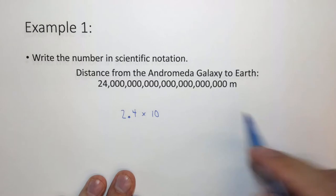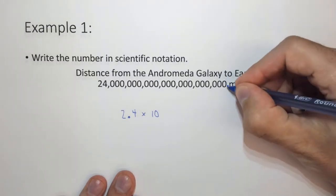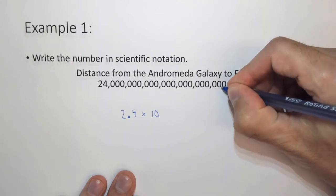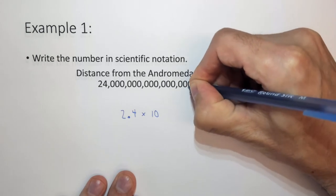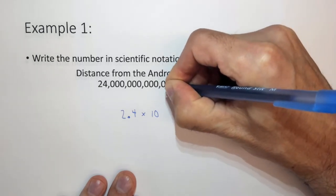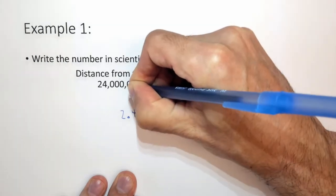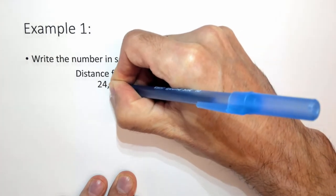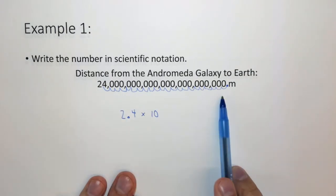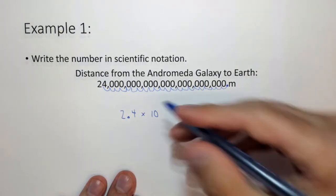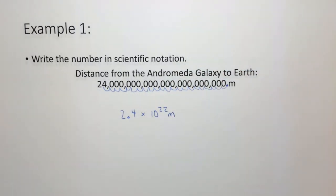This number is greater than 1, so the decimal place is at the end. We have to move that decimal place 22 times. Since this number is far greater than 1, the exponent is going to be positive 22, and the units stay the same.